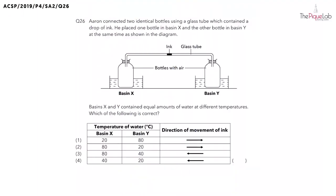Question 26. Aaron connected two identical bottles using a glass tube which contained a drop of ink. He placed one bottle in Basin X and another bottle in Basin Y as shown in the diagram. Basins X and Y contain equal amounts of water, but they were both at different temperatures.